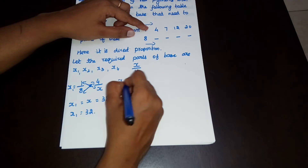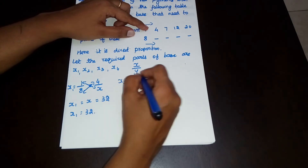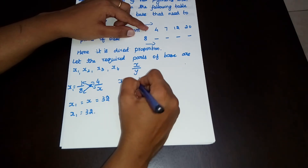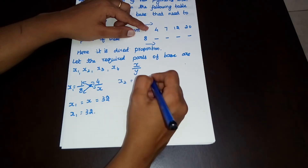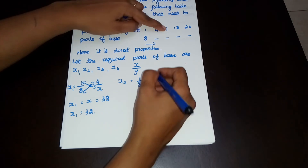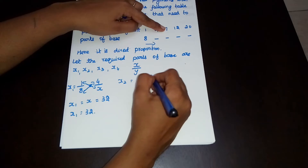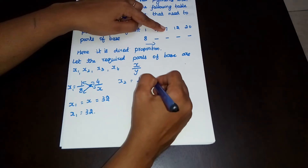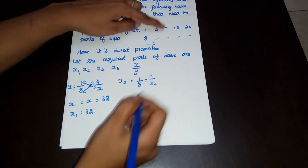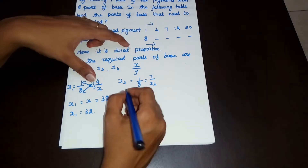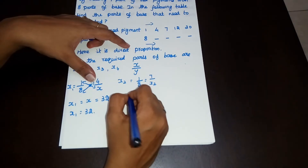Next, x2. So, 1 by 8 is equal to 7 by x2.